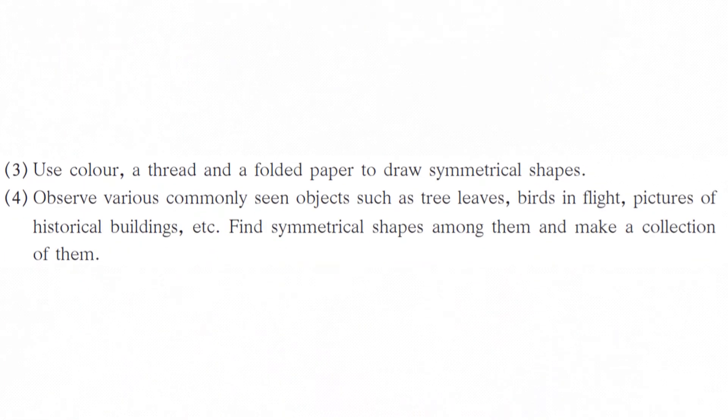So, this is our second answer. Then we have the third and fourth questions which you are all supposed to do as homework. Question 3: Use color, a thread, and a folded paper to draw symmetrical shapes. Question 4: Observe various commonly seen objects such as trees, leaves, birds in flight, pictures of historical buildings, etc. Find symmetrical shapes among them and make a collection. These two questions are for homework and you are all supposed to do them by yourself.